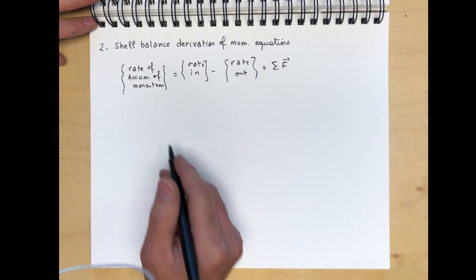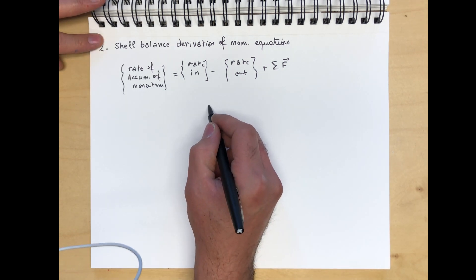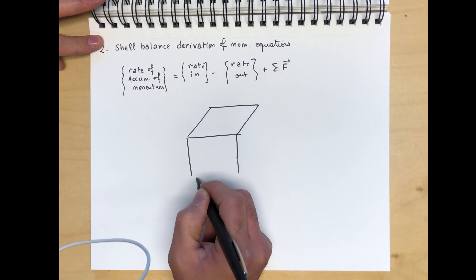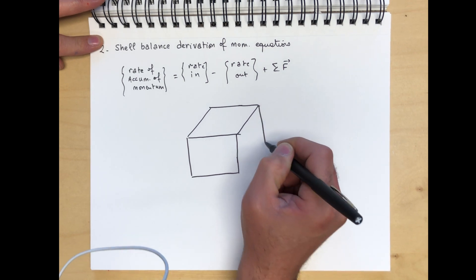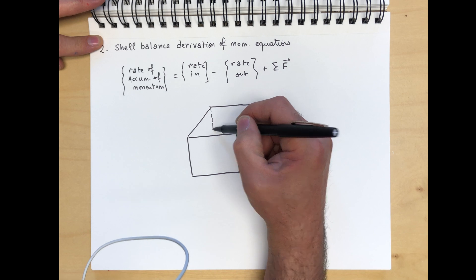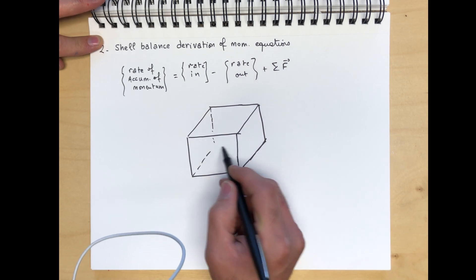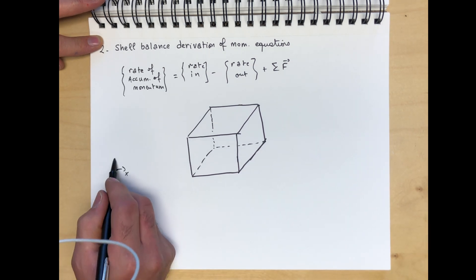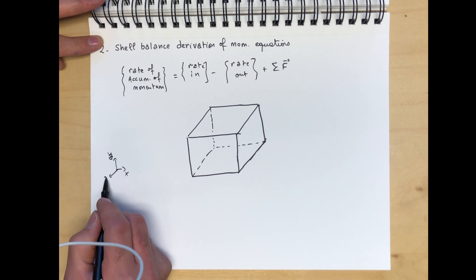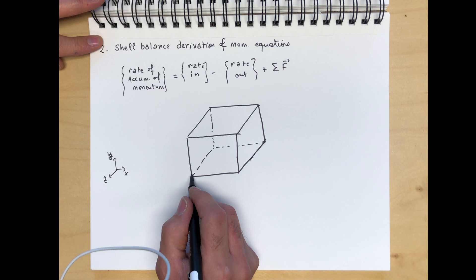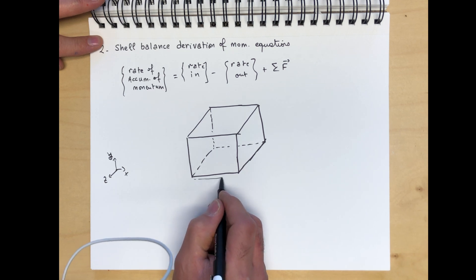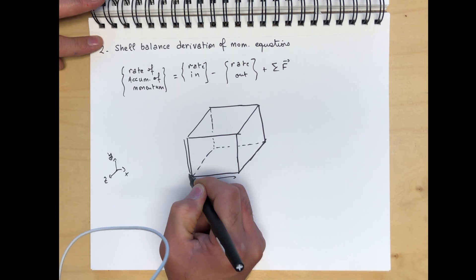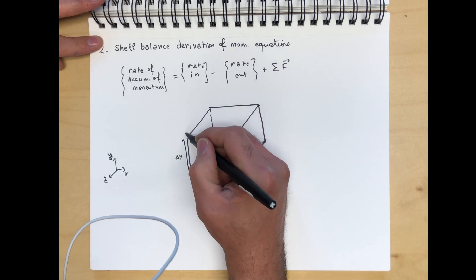We take our usual fluid element and magnify it. The element has coordinates x, y, and z with dimensions delta x, delta y, and delta z.